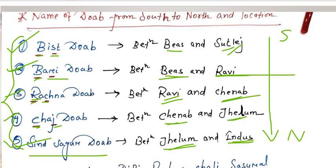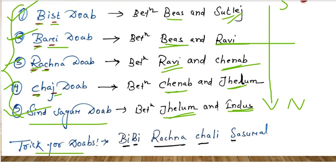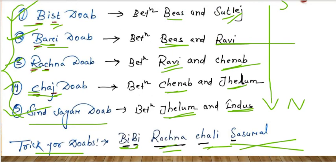The trick for naming all five doabs so you can remember them is: 'BV Rachna Chali Sasural.' I know it's funny, but awkward tricks are easier to memorize. From B it's Bist, from B it's Bari, Rachna is direct, from 'Chali' — CHA — you can remember Chaj doab, and from S of 'Sasural' you can remember Sindh Sagar doab. With this trick you can remember the names of all five doabs and their rivers.